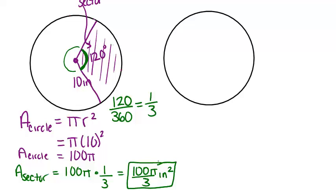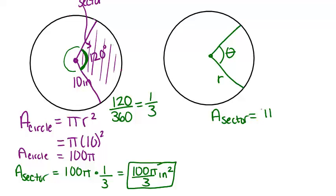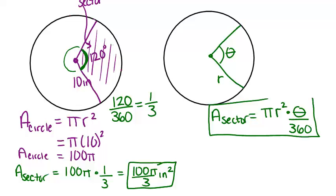So how does that work in general? If you want to figure out the area of a sector, you need to know two pieces of information: the central angle and the radius. The area of the sector will always be the area of the full circle, which is pi r squared, times the fraction of the circle that the sector is, which you can figure out by taking theta, the central angle, and dividing by 360. So this is the general formula for the area of a sector of a circle.